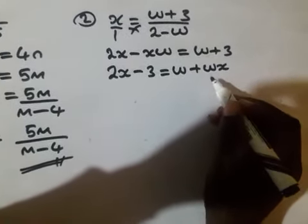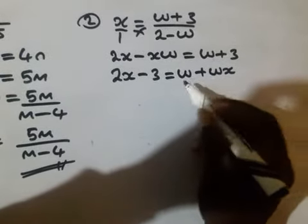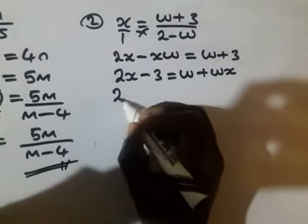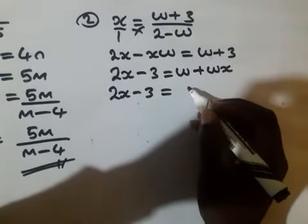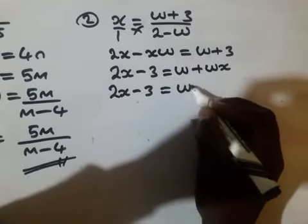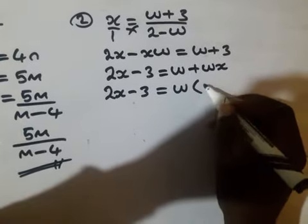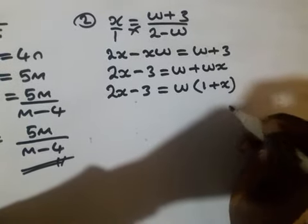At this stage, we have to factorize w, so it will be 2x minus 3, which is equal to w out, then we remain with 1 plus x.